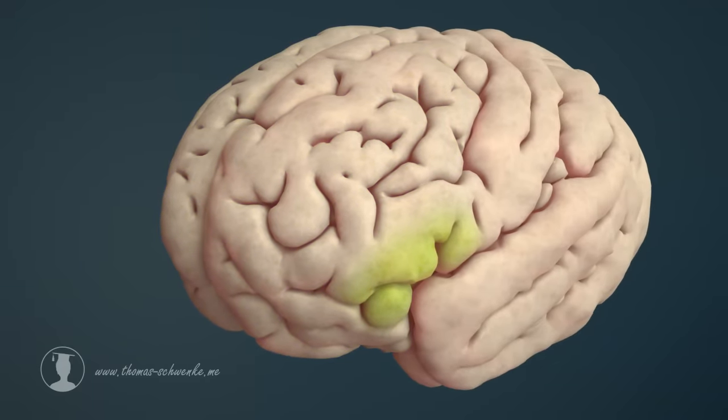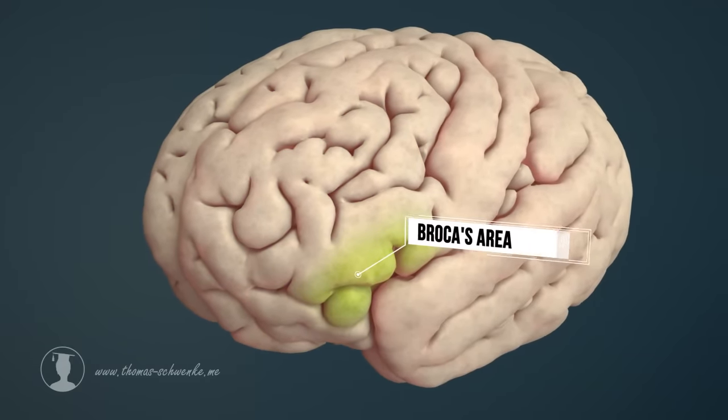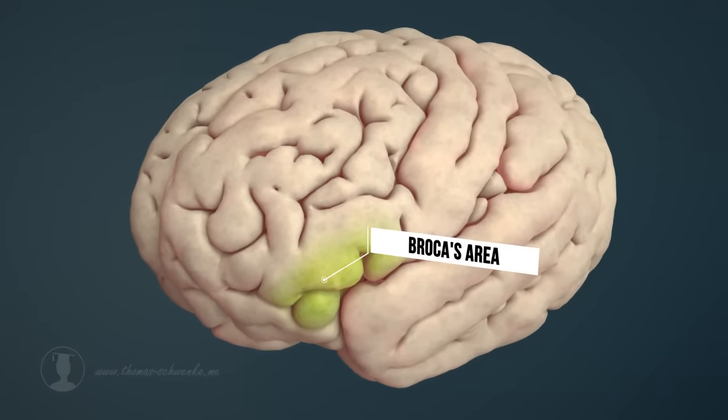Broca's area, which makes spoken and written language possible, is often located on the left side.